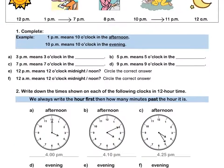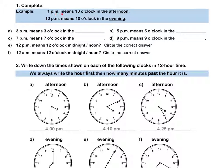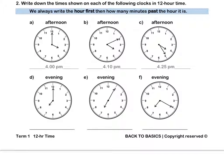Let's look at question 1. 1 PM means 1 o'clock in the afternoon. 10 PM means 10 o'clock in the evening. Pause this video to complete question 1 by yourself. Question 2. Write down the times on each of the following clocks. For A, it is now afternoon, it is 4 o'clock, so it is 4 PM. B, afternoon, it is 10 minutes past 4, so we write 4.10 PM. For C, the minute hand is on the 5, so it is 4.25 PM because it is afternoon.